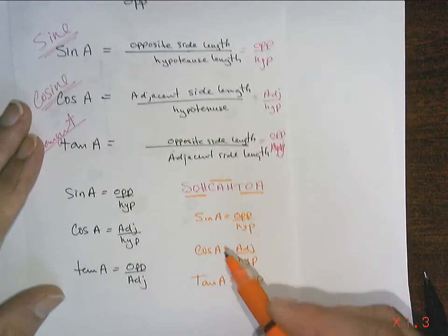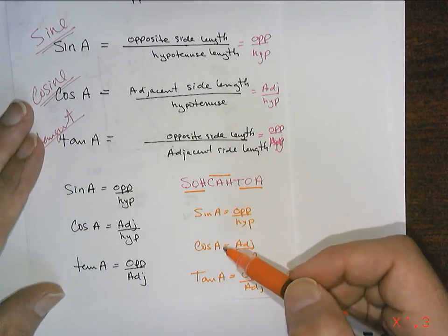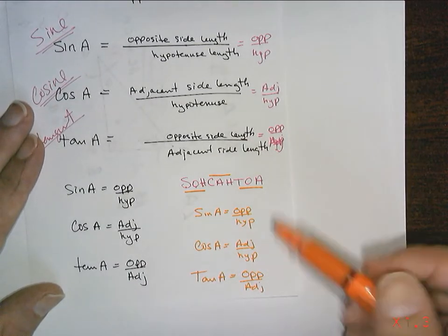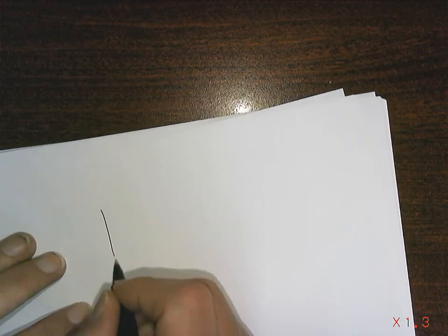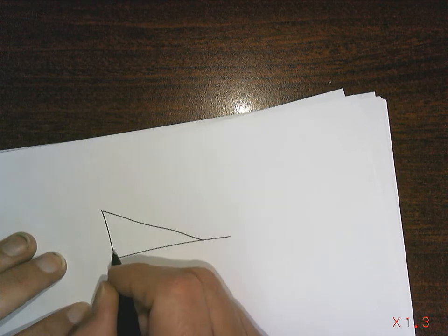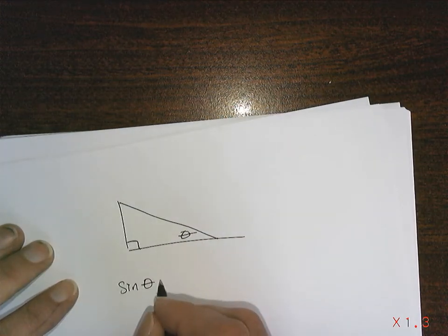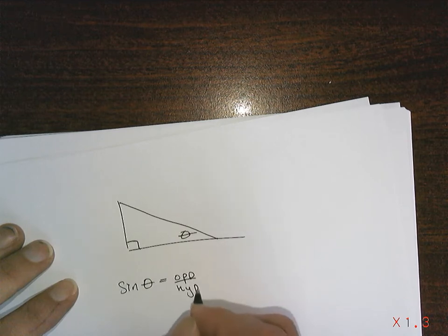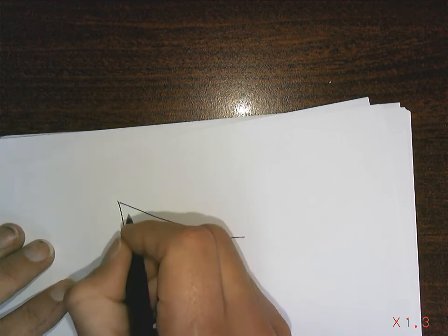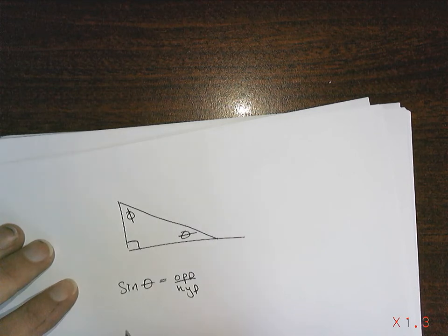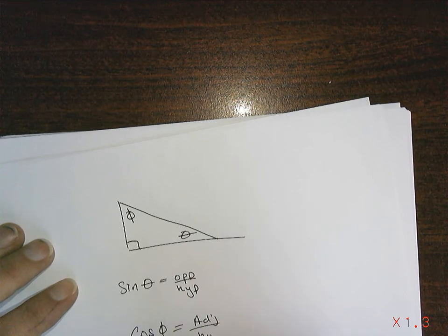Now I'm using sine A, cosine A, tangent A all through the place here. You do realize that if I give you a triangle and I name it theta, then instead of sine A, it'll be sine theta equals opposite over hypotenuse. And if I name it phi, then it would be cosine of phi equals adjacent over hypotenuse.